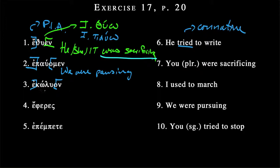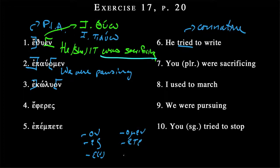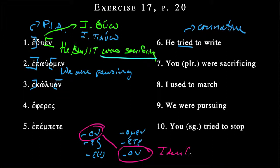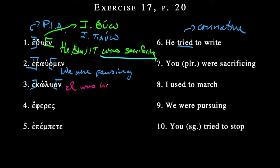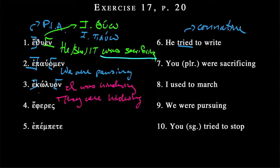Remember that we had that omicron-nu ending. It never hurts to write these out again: 'amen,' 'ete,' and then 'on.' We found that first person singular and third person plural had identical forms, which means this could go either way. So this will either be 'I was hindering' or 'they were hindering.' Out of context, there's no way to know. In reading actual Greek, this will almost always be very clear — 95% of the time you won't need to worry about it.